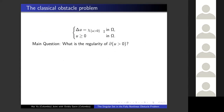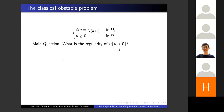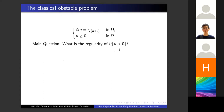The main question of this problem is: what is the regularity of the free boundary? As Shabu was saying, generically we should expect this free boundary to be smooth everywhere. But we are interested in what happens for all boundary data — given any boundary data, what can I say about the regularity of this free boundary?